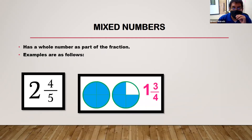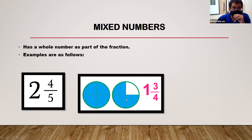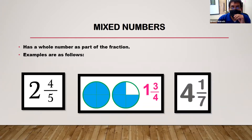Here is a visual representation: we have two circles with the blue shaded in, represented by the number one, and three out of the four sections shaded. The circles are divided into fourths and the shaded portion is represented in the mixed number as one and three-fourths. We also have the last example as four and one-sevenths.